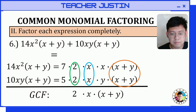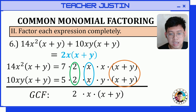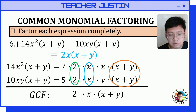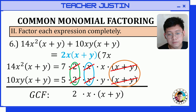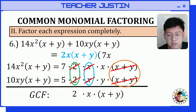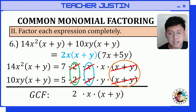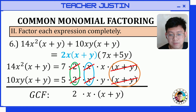The greatest common factor is 2x times the quantity x plus y. Removing these common factors, for the first term the remaining factor is 7x, and for the second term the remaining factor is 5 times y, which is 5y. So the factors of the polynomial are 2x times the quantity x plus y times the quantity 7x plus 5y.